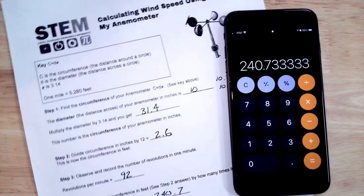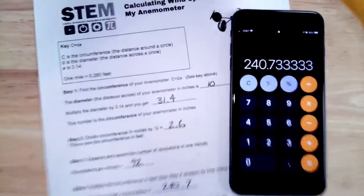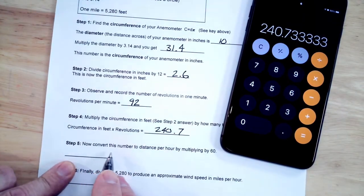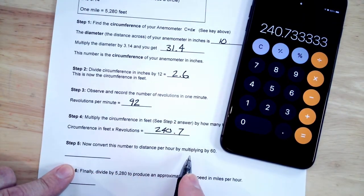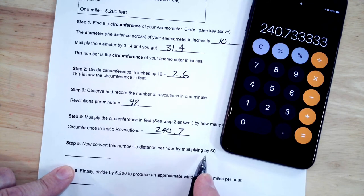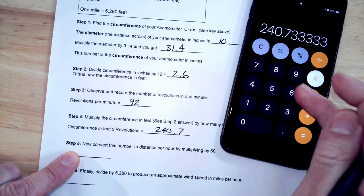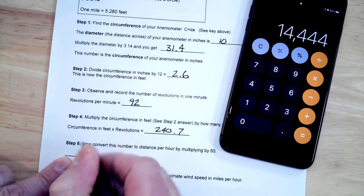Step 5, now convert this number to the distance per hour by multiplying by 60. So we're going to convert that number, multiply it by 60, that's going to give us 14,444.